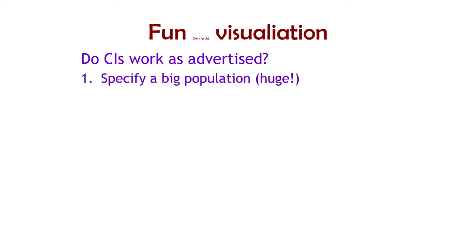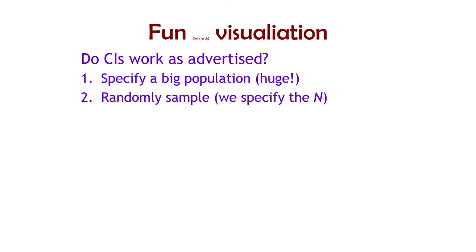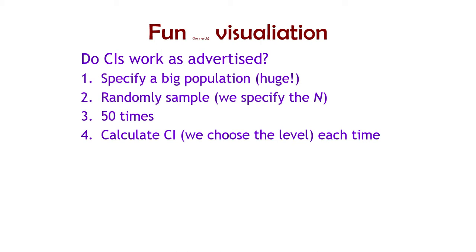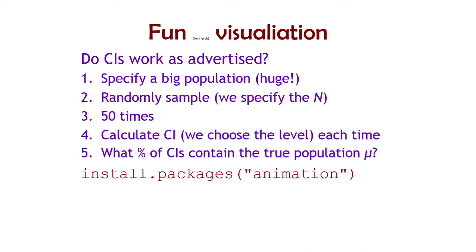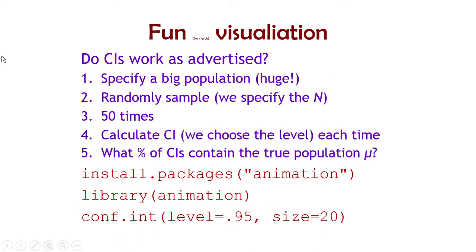The actual interpretation can be demonstrated with a visualization. You can specify a gigantic population in the computer's mind so we know what it is, then randomly sample with a specific sample size — 50 times or 20 times — calculate the confidence interval each time, and count the percentage of times those confidence intervals contain the true population mean. If you're running R, you can install the animation package, load it using library(animation), and then run the conf.int function, which makes a fun animation of how confidence intervals work. It's not my function, but somebody made it and it's pretty neat.